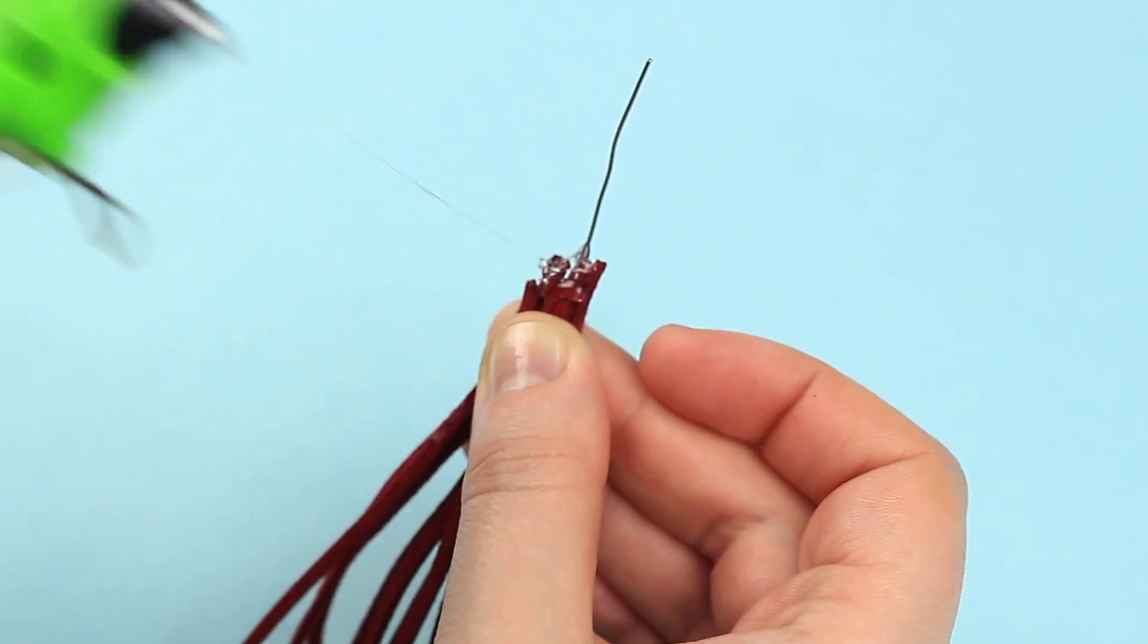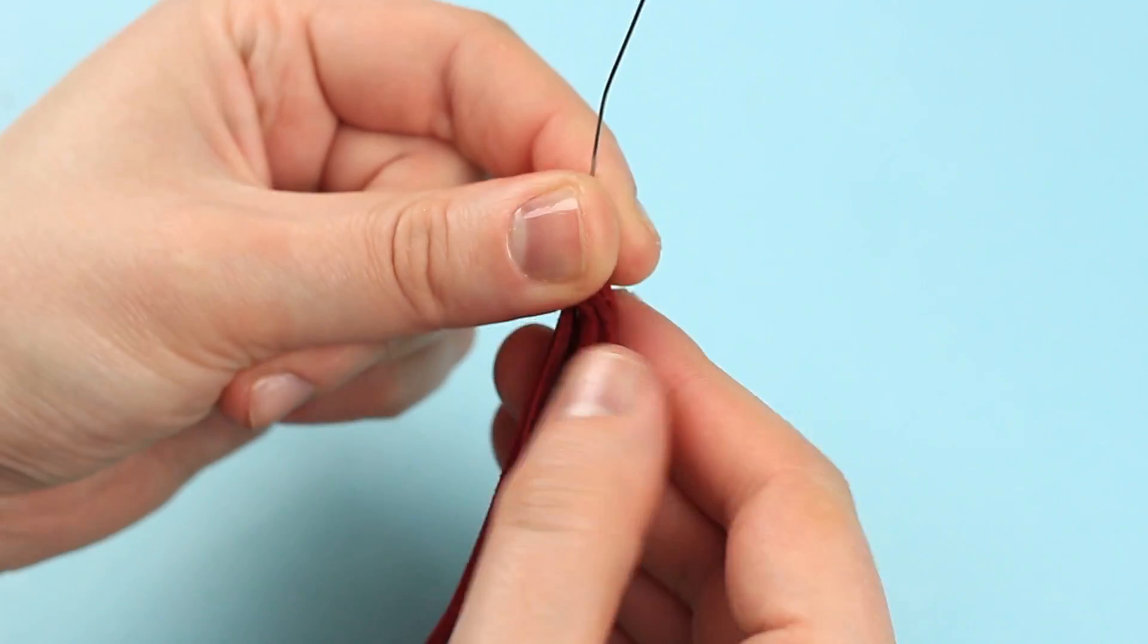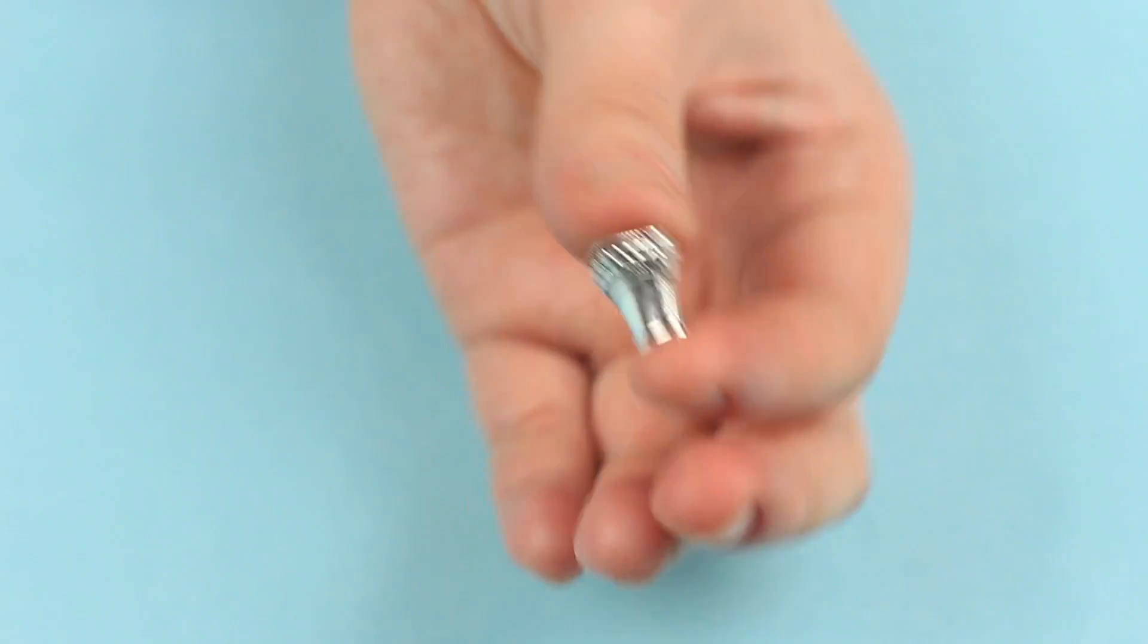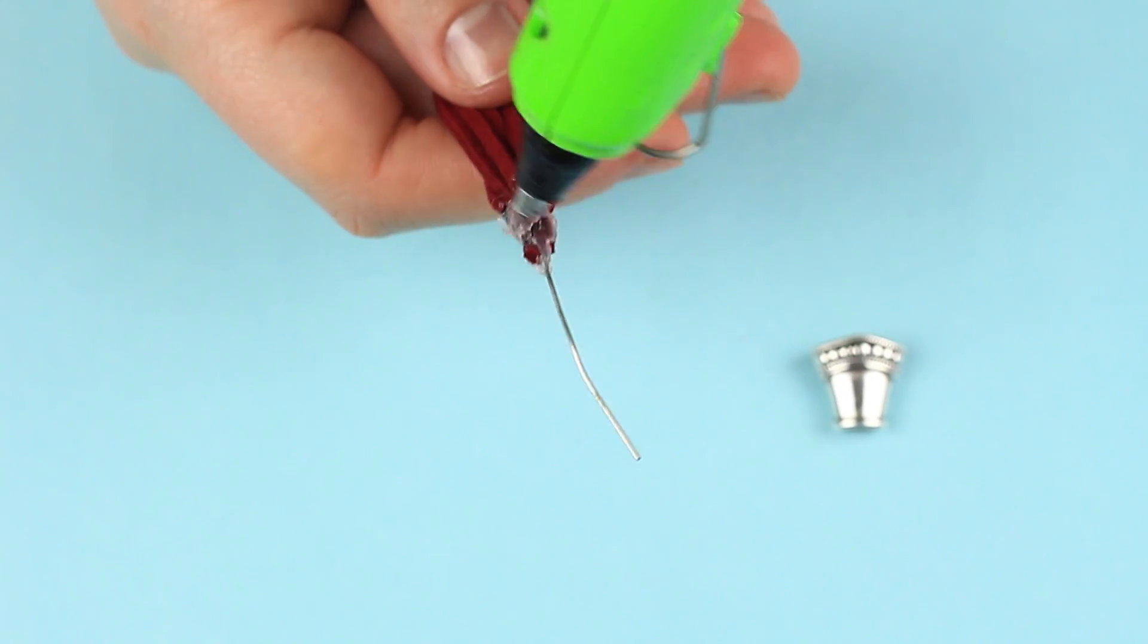As soon as the glue is cool, twist the tassel with your fingers and press over. Add a bit of hot glue again and put on the cone cap.